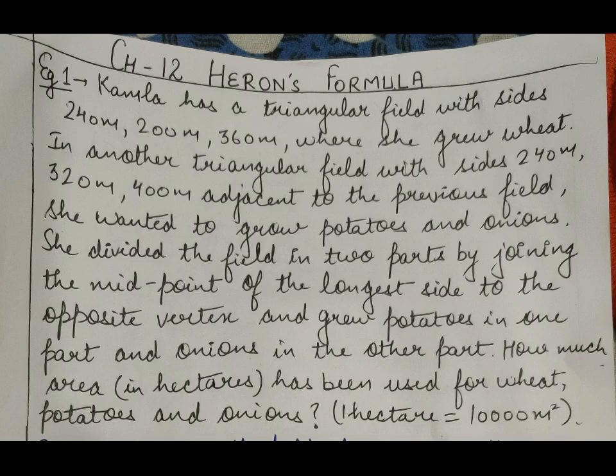In today's class, we are doing some more examples based on Heron's formula. Here is example number one: Kamala has a triangular field with sides 240 meter, 200 meter, and 360 meter where she grew wheat.